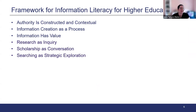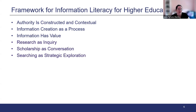There are six frames making up the framework, listed in alphabetical order. The first is Authority is Constructed and Contextual. This means that information resources reflect their creator's expertise and credibility and are evaluated based on the information need and the context in which the information will be used. Authority is constructed in that various communities may recognize different types of authority, and contextual in that the information needed may help determine the level of authority required.